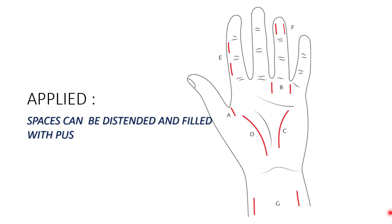Moving on to the very important applied or clinical anatomy of the fascial spaces of the hand: the mid palmar space, the thenar space, and the pulp spaces are of great clinical importance as these spaces are more prone to infection and pus collection, being dead potential spaces. The spaces can be distended and filled with pus, and in such conditions, incision and drainage of the pus is the mode of treatment. This picture represents the incision to be taken when a space is infected.